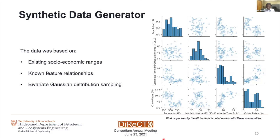We'll briefly show the results from the multi-dimensional scaling. After MDS was performed and markers were scaled using the normalized prediction, we can see that cities are grouped in the same space. Cities with high population densities are grouped together, median population densities are in another region, and low population densities are here. There are also a few tiny dots that fall in between. Applying this to other features, we can see that there are tentatively three groupings across all features.